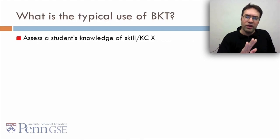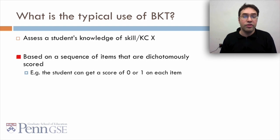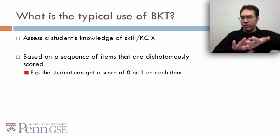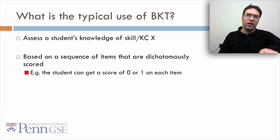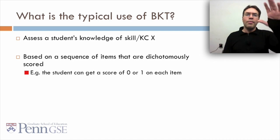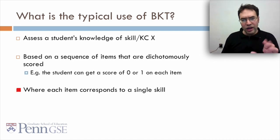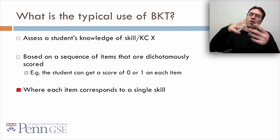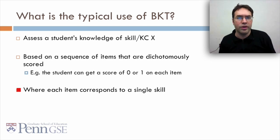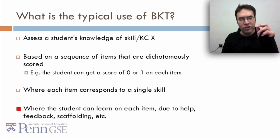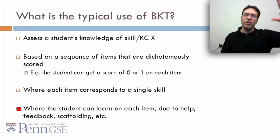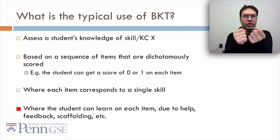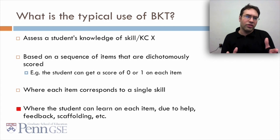What's the typical use of BKT? It's to assess a student's knowledge of a skill or knowledge component X based on a sequence of items that are dichotomously scored, which means that the student can get a 0 or a 1 on each item, nothing in between. It turns out you can use BKT even for cases where there's partial credit, but it's not the most common use. Each item corresponds to a single skill. An item doesn't have to be a separate problem. It could be a problem step in an overall problem that has a distinct skill associated with it. And the student can learn on each item due to help, feedback, scaffolding, whatever. The point is that as the student's practicing, they're also learning. This is not just a test. It's actually a learning system.